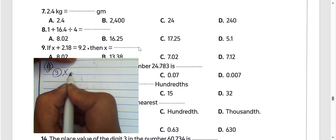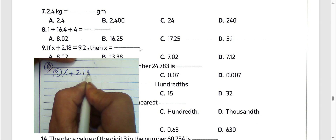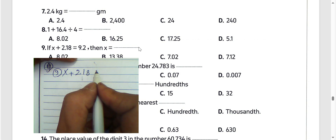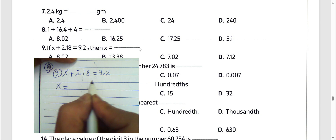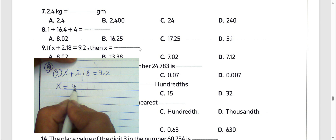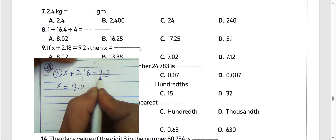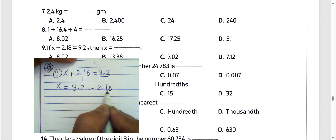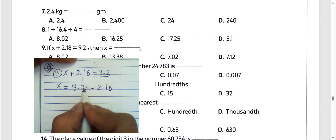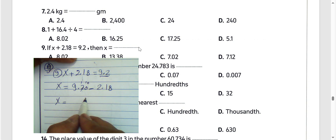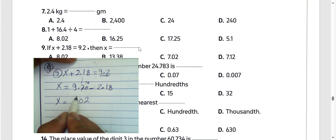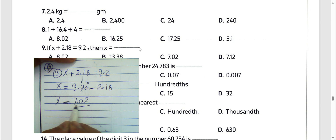Question number 9: if x plus 2.18 equals 9.2, then the value of x — we find the difference: 9.2 subtract 2.18. We must equalize the decimal places. 0 minus 8 we can't do, so 10 minus 8 equals 2. 1 minus 1 equals 0. And 9 minus 2 equals 7. The result will be 7.02.